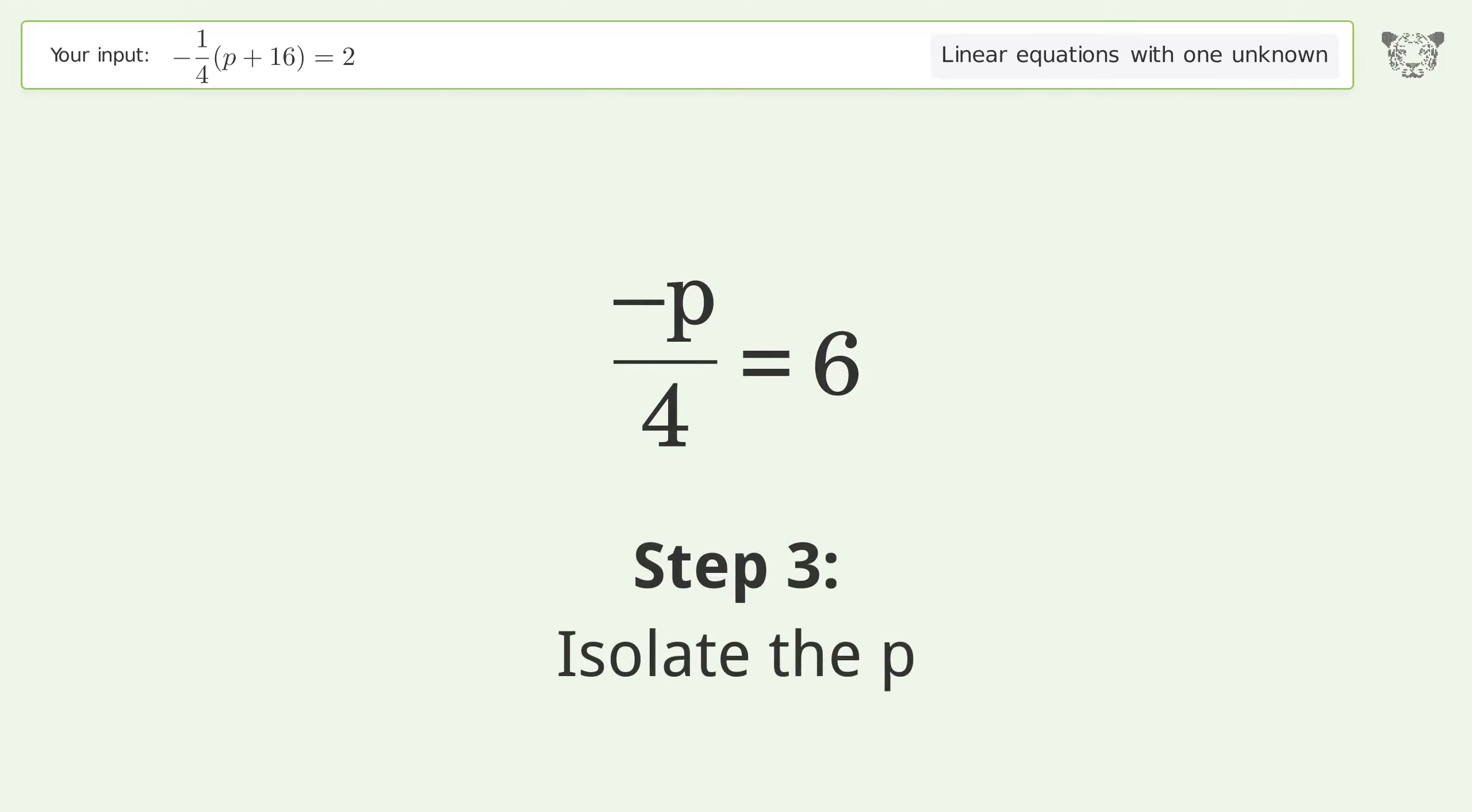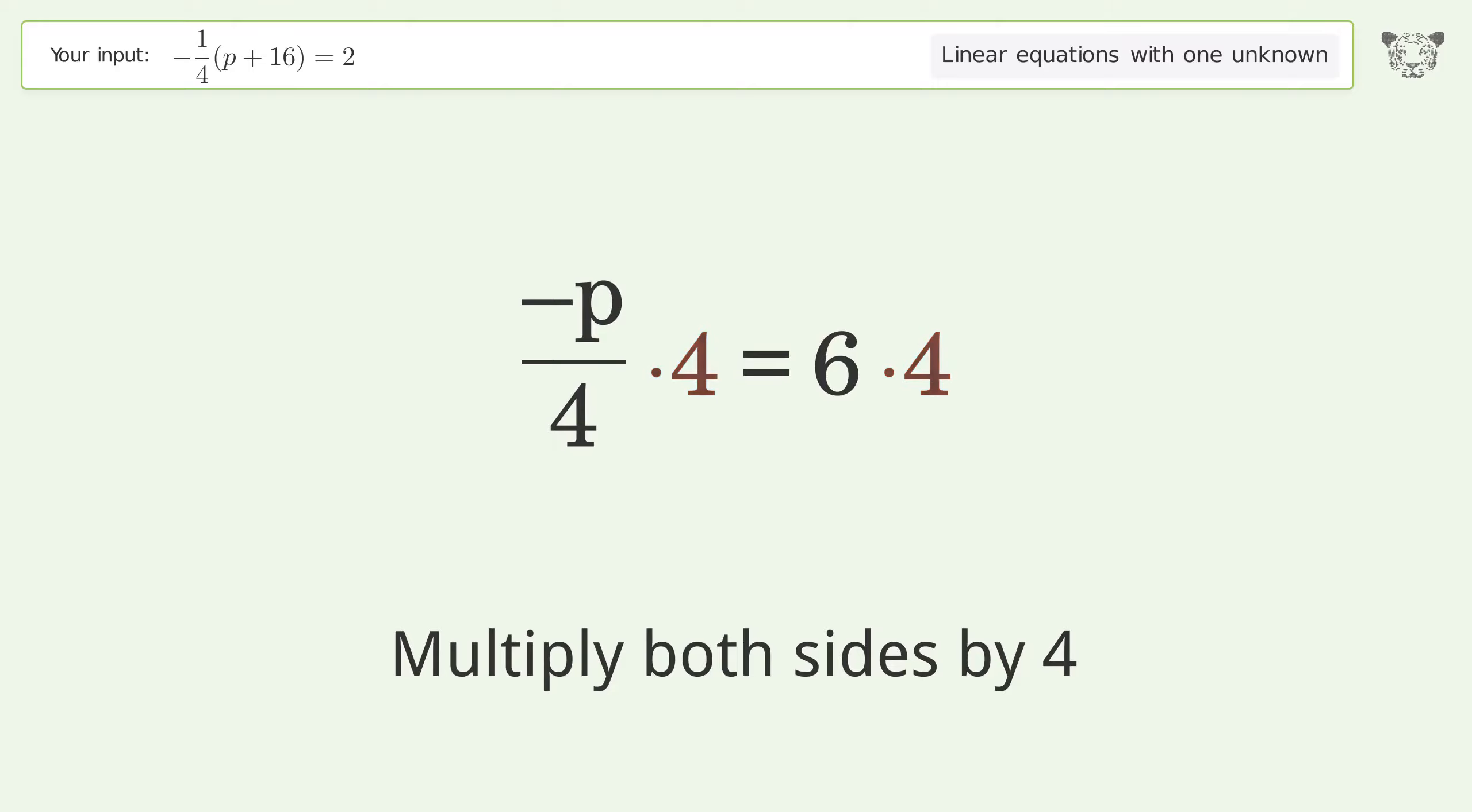Isolate the p. Multiply both sides by 4. Group like terms.